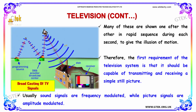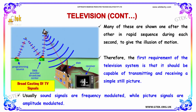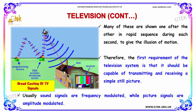Many of these still pictures are shown one after the other in rapid sequence during 8 seconds to give the illusion of motion. Therefore, the first requirement of the television system is that it should be capable of transmitting and receiving a simple still picture. Usually, sound signals are frequency modulated while picture signals are amplitude modulated.